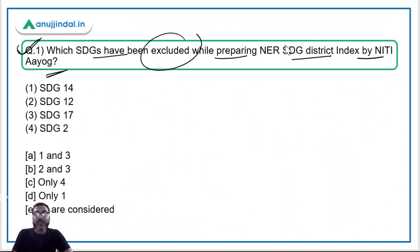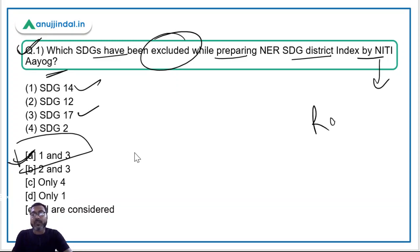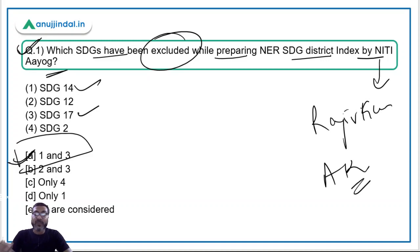Coming back to question number one: which SDGs have been excluded? SDGs 17 and 14 have been excluded while formulating this index, so the correct answer is option one and three. Remember: NITI Aayog's Vice Chairman is Dr. Rajiv Kumar, CEO is Mr. Amitabh Kant, and the ex-officio Chairperson is the Prime Minister of India.